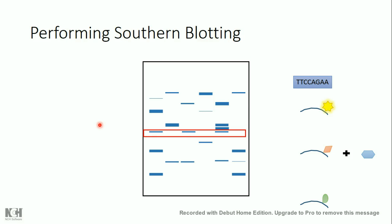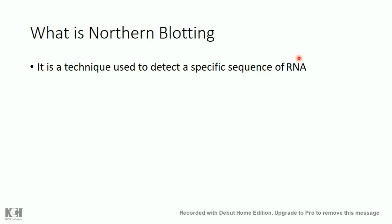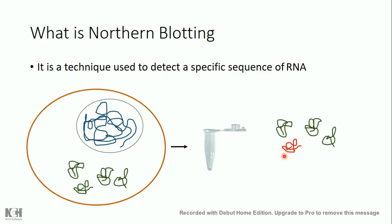Now let's speak about northern blotting. Northern blotting is very similar to southern blotting, but it is used to detect RNA. Let's say I have a cell with a genome and RNAs. I extract the RNAs which contain the sequence of interest, and I want to detect this sequence on the gel.